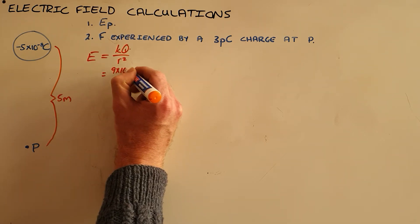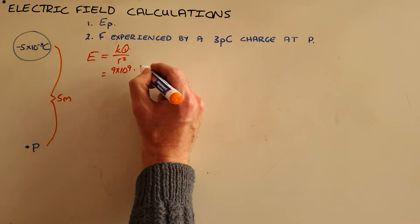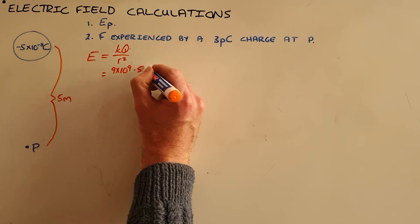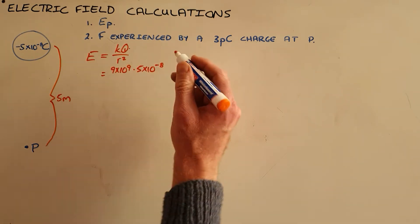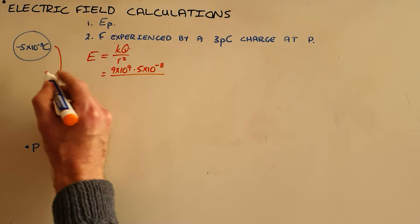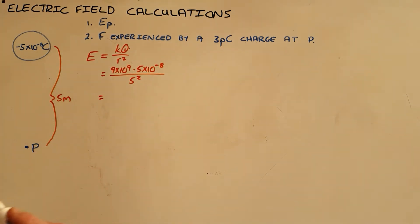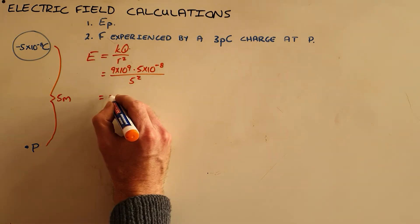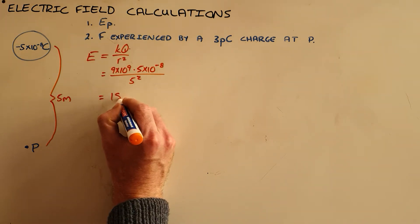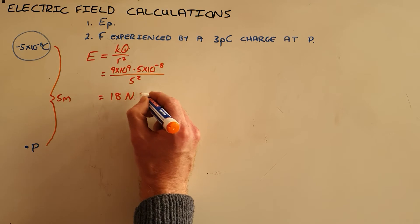k we know is our constant, and q is given to us as 5 times 10 to the negative 8 coulombs, and the distance between them measured in meters is 5 squared. So, this tells us then that the electric field at this point is 18 newtons per coulomb.